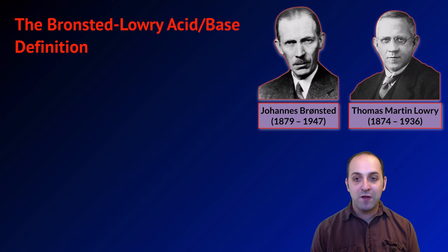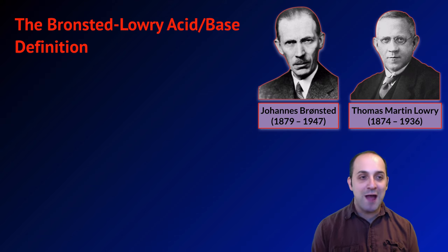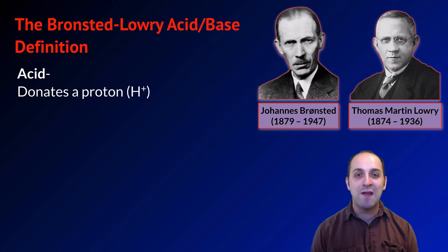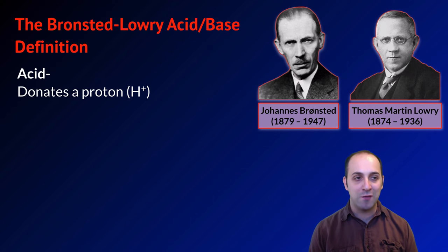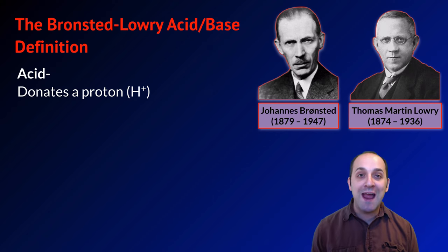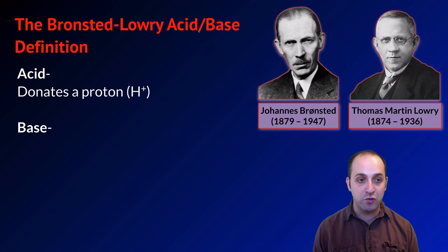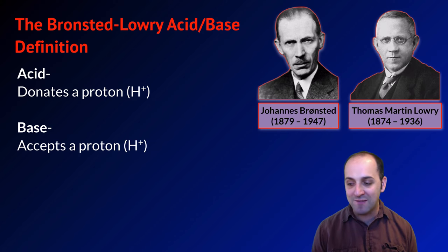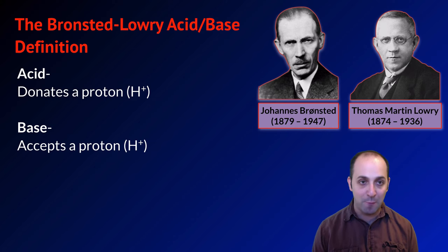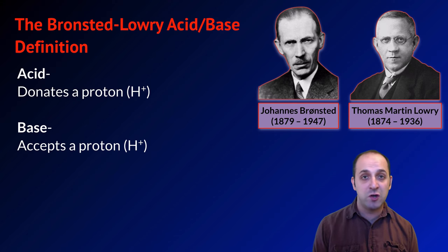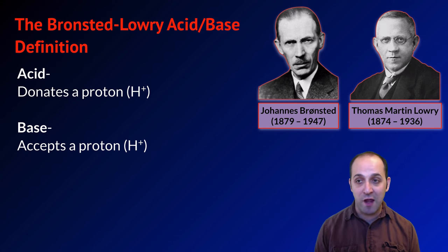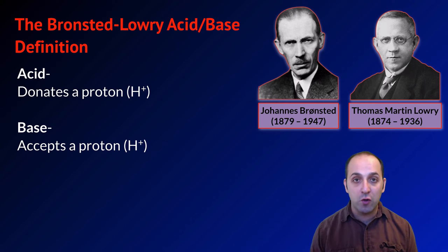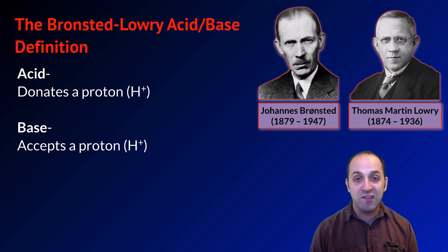Here are the men themselves, Johannes Bronsted and Thomas Martin Lowry, and they came up with a different definition independently. According to the Bronsted-Lowry definition, an acid is any substance that donates a proton in solution, and a base is any substance that accepts a proton. This is a little bit different than the Arrhenius definition, which dealt with hydronium and hydroxide ions. Bronsted-Lowry are only looking at the behavior of substances with regard to protons.